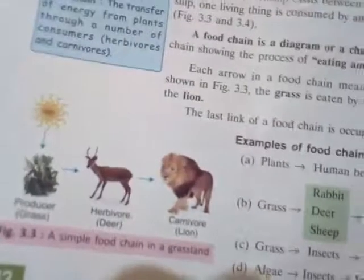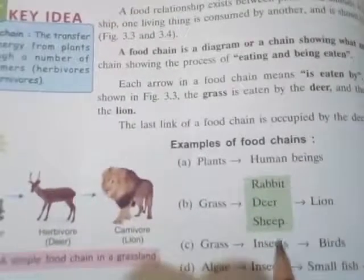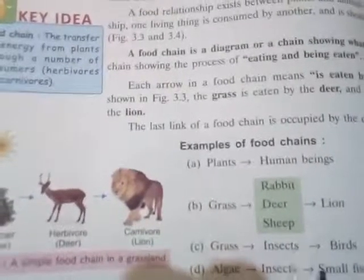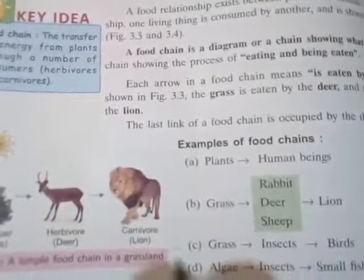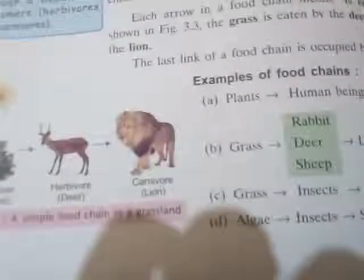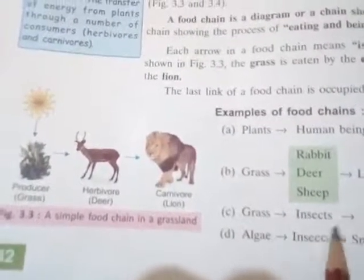Some examples of food chains: plants are directly eaten by human beings; deer, rabbit, and sheep eat grass, and then the lion eats the rabbit, deer, or sheep — so energy is transferred from grass to the lion. Another example: grass → insects → bats. Insects eat the grass and bats eat the insects. These food relationships are basically called food chains.